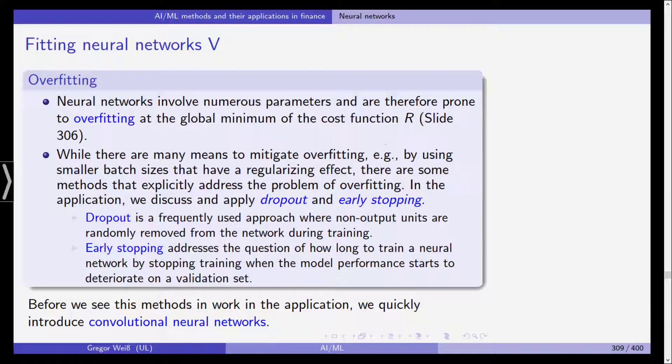The first one is dropout, the other one is early stopping. Now dropout is frequently used in a way where we are using non-output units and we are randomly removing those non-output units from the network during training. So again, we are reducing the observations that are being used to train the model. While early stopping addresses the question of how long to train a neural network. And we have some stopping rule that determines that training is stopped when the model performance starts to deteriorate on a validation set. So in a sense, we are already including the validation set in our training. And if we see that actually the model seems to overfit and the model seems to learn only based on the training sample and doesn't generalize well, we stop. So this is what we will see in the application.